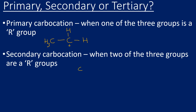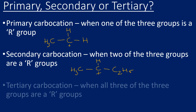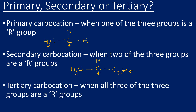A secondary carbocation is where two of those three groups are R groups — for example, an ethyl and a methyl, with the third being a hydrogen. A tertiary carbocation is when all three groups are R groups. They could all be the same or different; I'm putting three methyl groups, and this would be a tertiary carbocation intermediate.